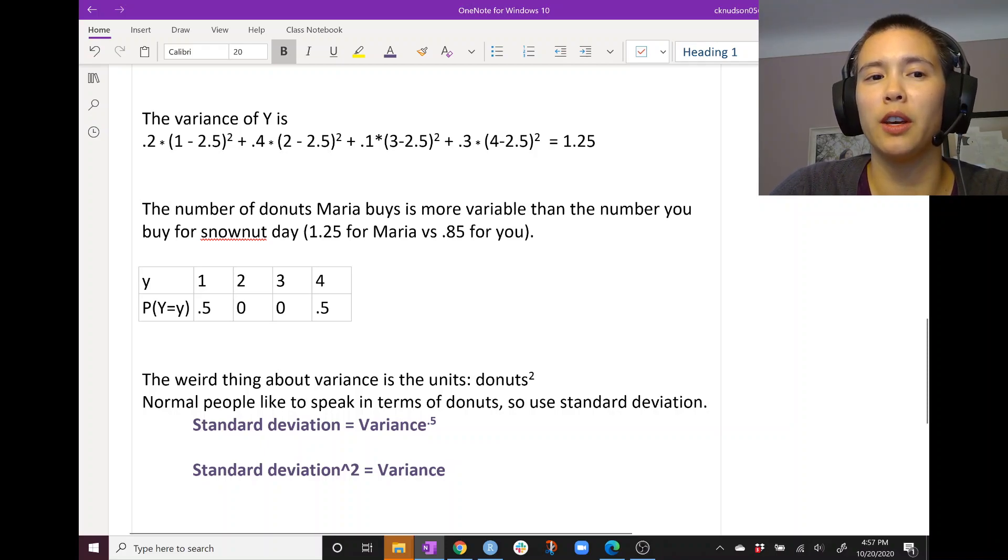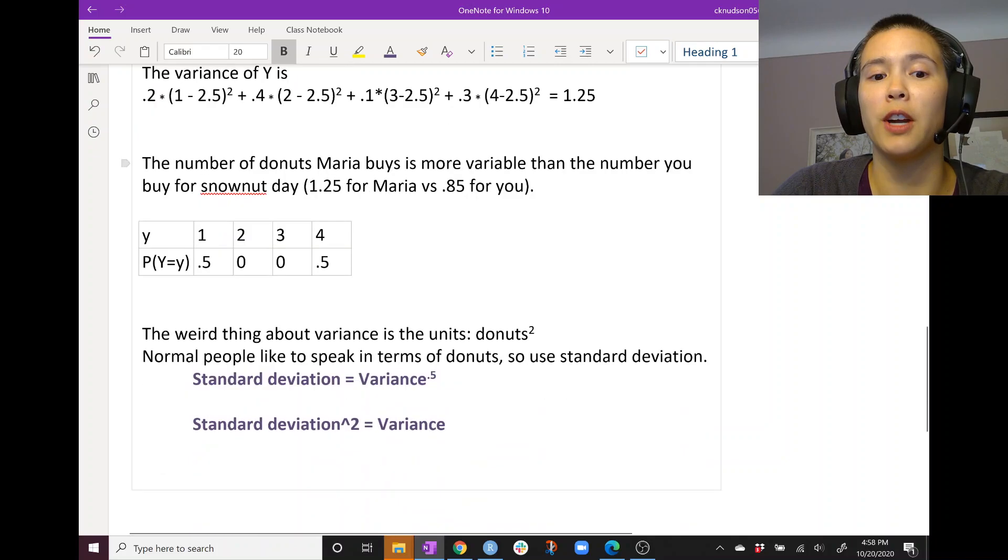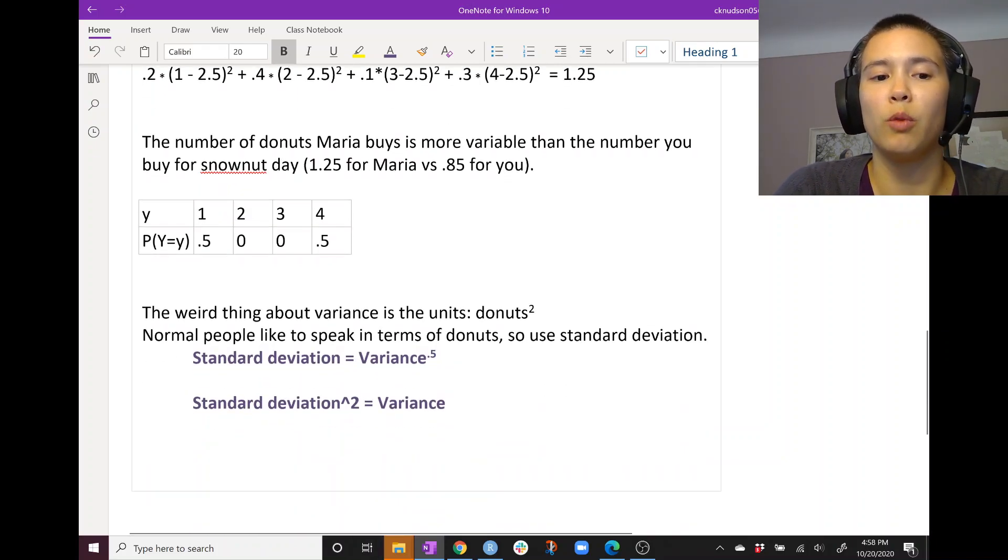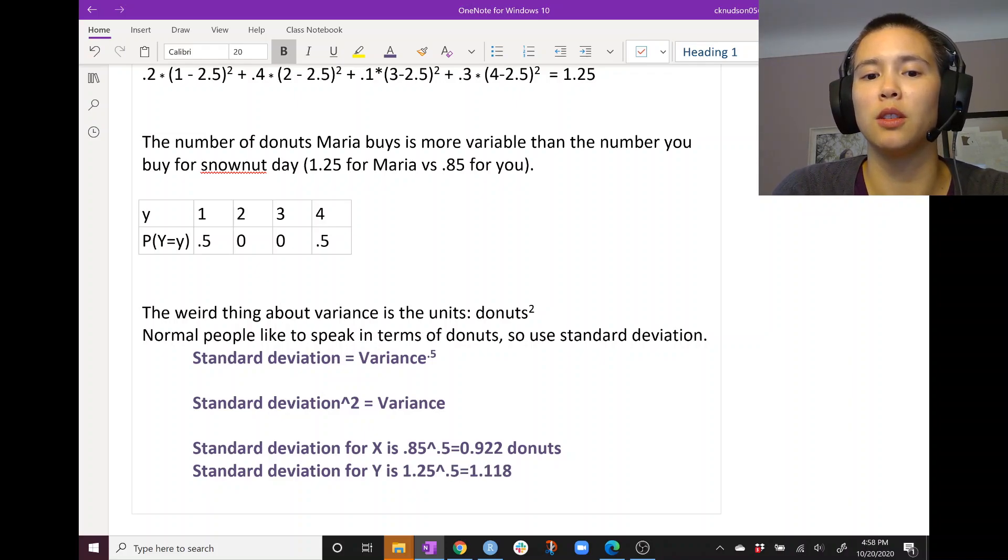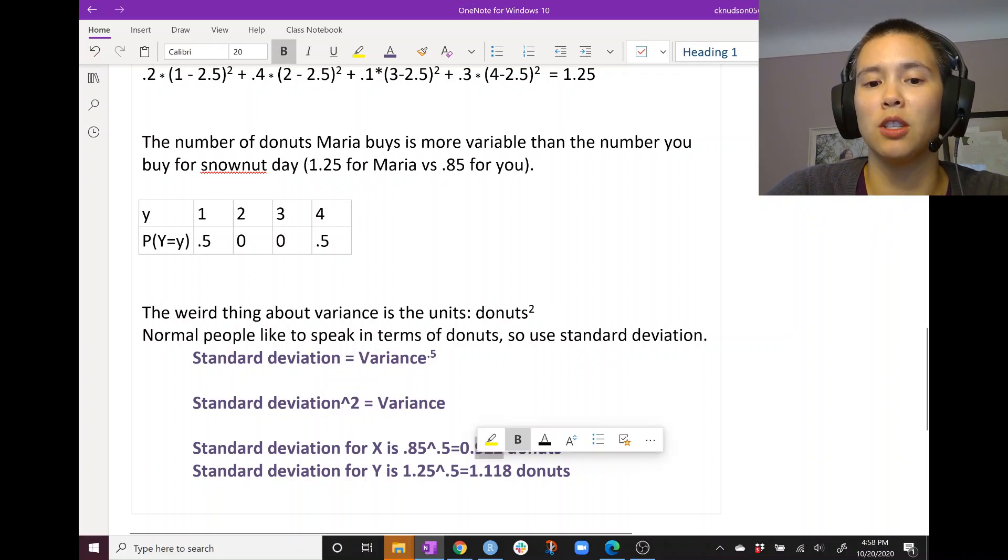So if we want to look at the standard deviation for x and y, we could do 0.85 to the 0.5, which is 0.922. And then the standard deviation for Y is 1.25 to the 0.5, which is 1.118. So there we have our standard deviation for your donut consumption on Snownut Day, which is 0.922, and the standard deviation for Maria's donut consumption on Snownut Day is 1.118.